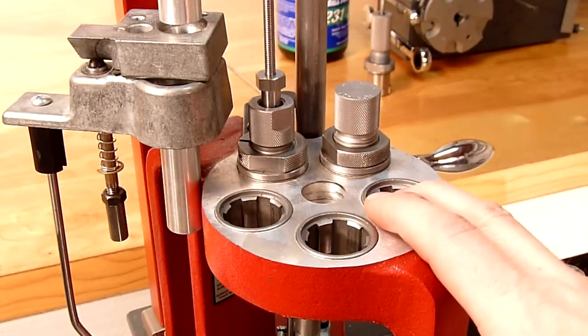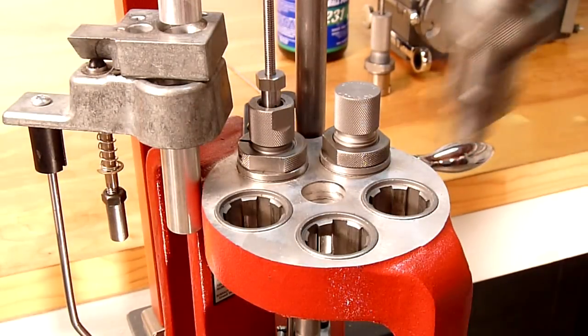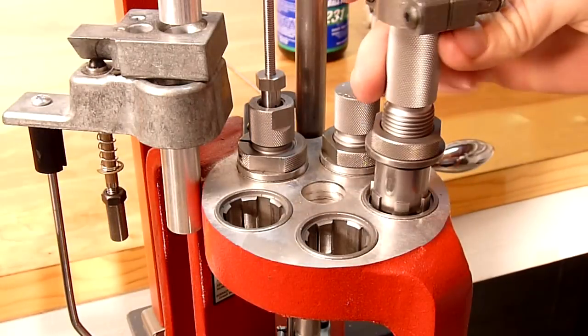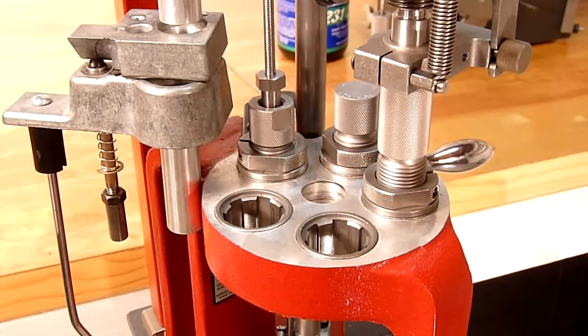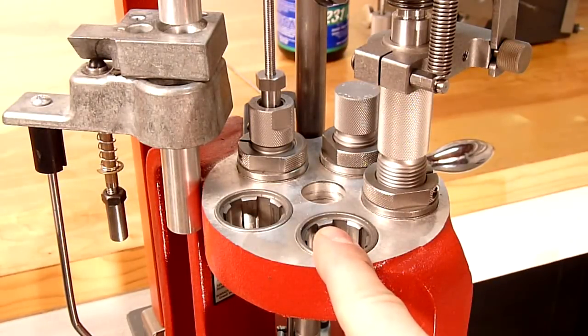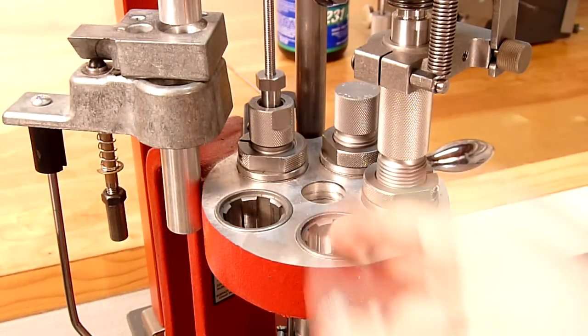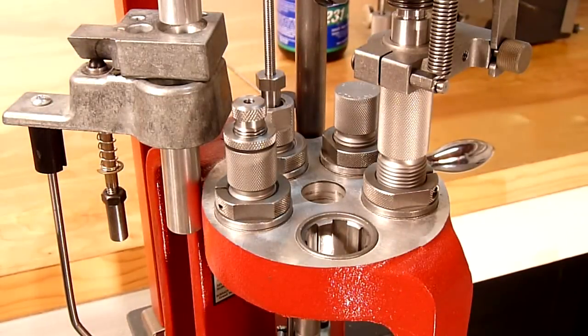We're going to leave this station open for our powder measure. So we can take our powder measure and drop that into this particular station. Then we're going to leave station number 4 open for our powder check die, and we're going to put our bullet seating die in station number 5. So in this particular video, we're going to use all 5 stations.